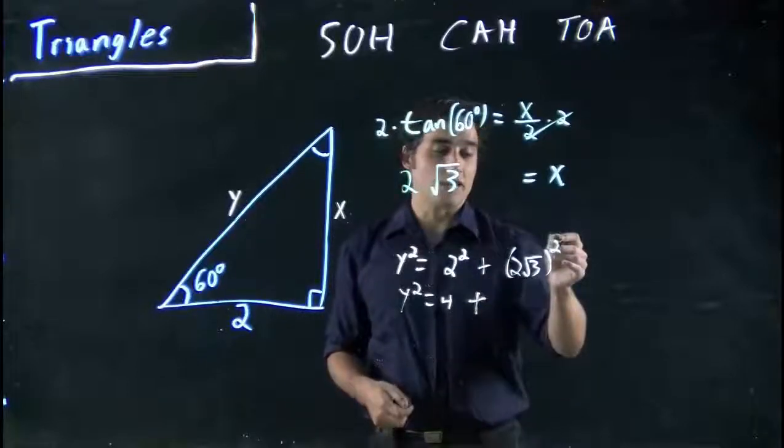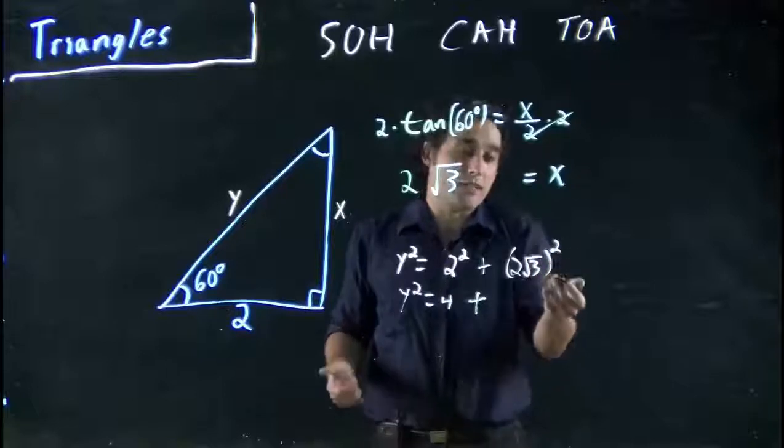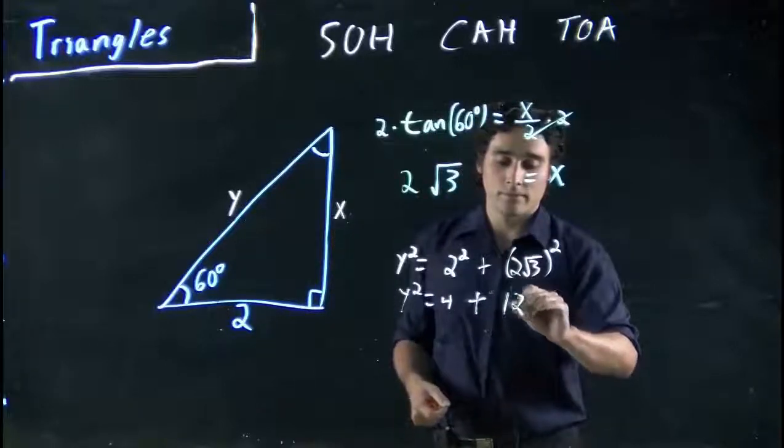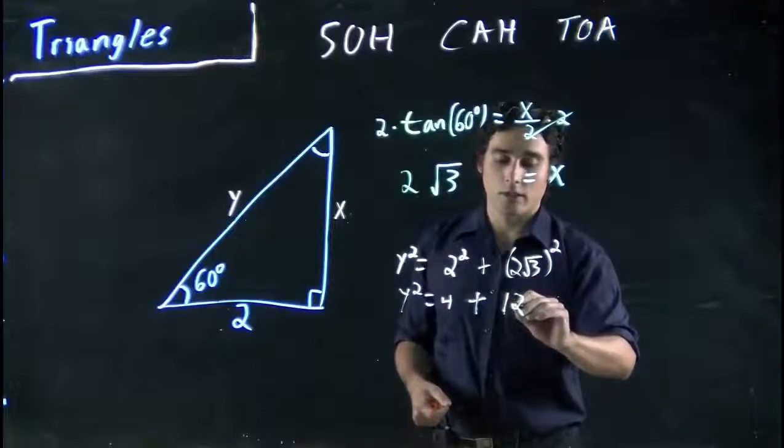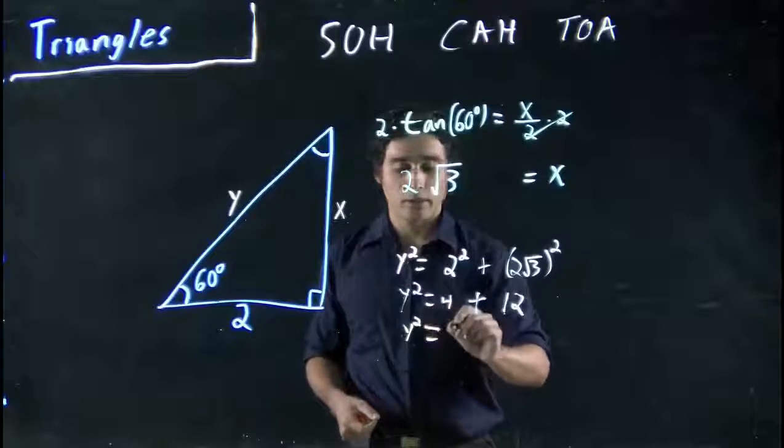Y squared is equal to 4 plus, remember if you're taking the square of this, you square both terms. So square root of 3 is 3, square root of 2 is 4, 4 times 3 is 12. So this becomes 12, which means Y squared is equal to 16.